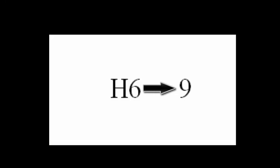So, for example, moving a hare from space 6 to space 9 would be H6 arrow 9.